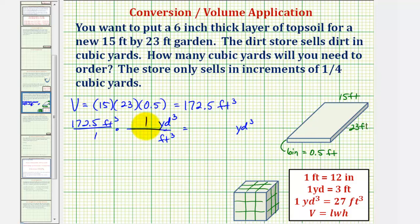And again, the conversion is one cubic yard equals 27 cubic feet. Notice the units of cubic feet simplifies out. So we're left with 172.5 divided by 27 cubic yards.